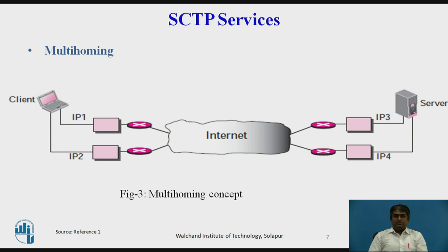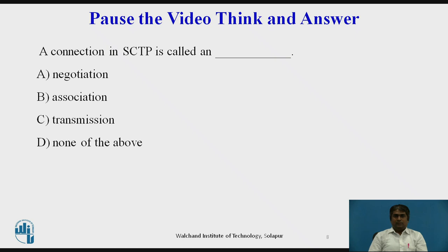The alternative pair is used if the main choice fails. In other words, at present SCTP does not allow load sharing between different paths. The SCTP association allows multiple IP addresses for each end. A quiz question is posed: a connection in TCP is called an association — the answer is B.